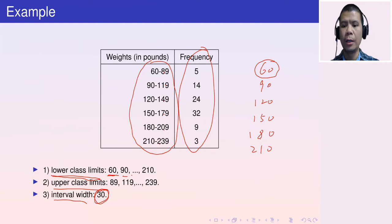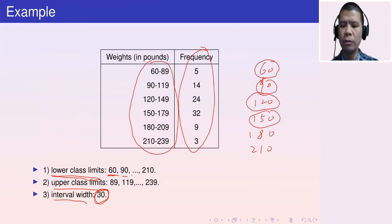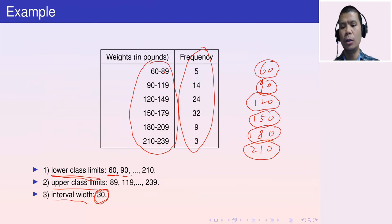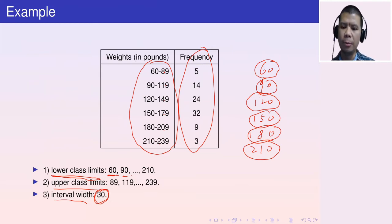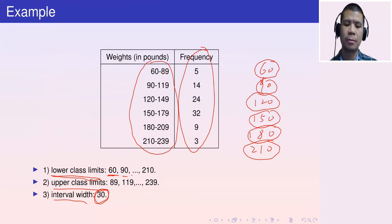If you know the first lower class limit — 60 — then adding the interval width repeatedly gives 90, 120, 150, 180, 210. You can get all the lower class limits once you know the first one.